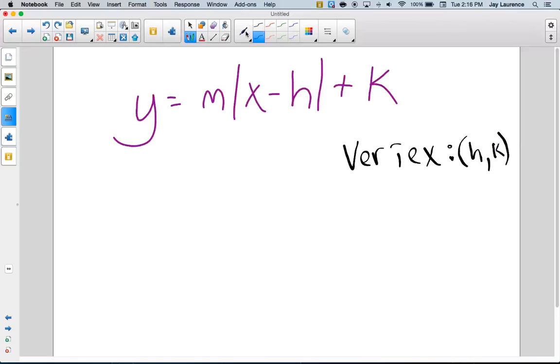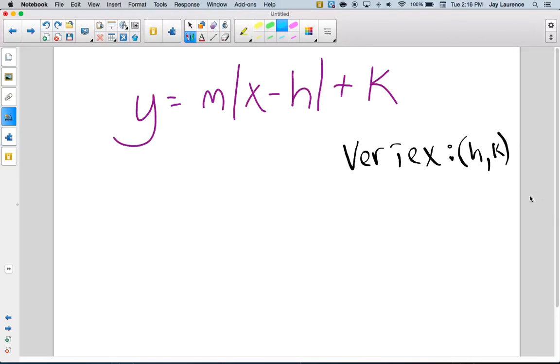And I got my highlighter out because I'm special. And I highlighted the h. Why did I highlight the h? Because it changed signs. Do you see it? The h changed signs. It was a minus h inside the absolute value. It's a positive h outside the absolute value.